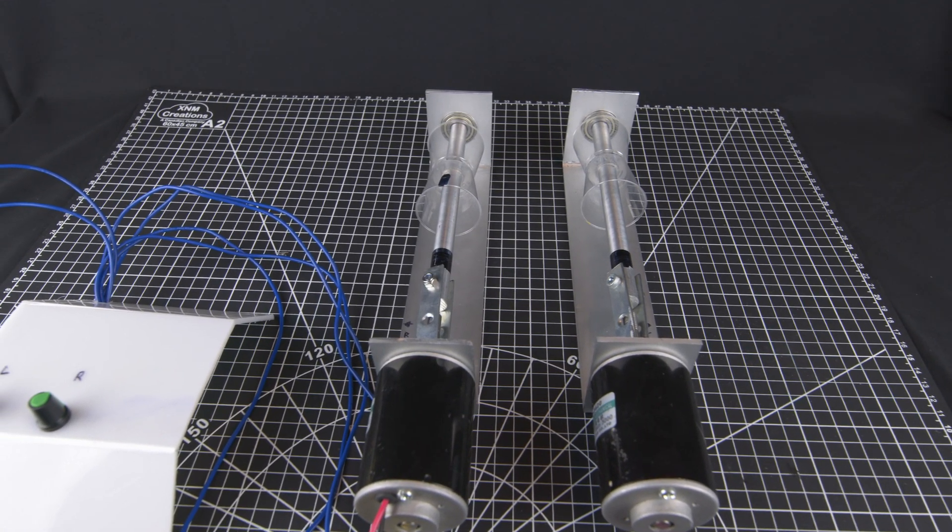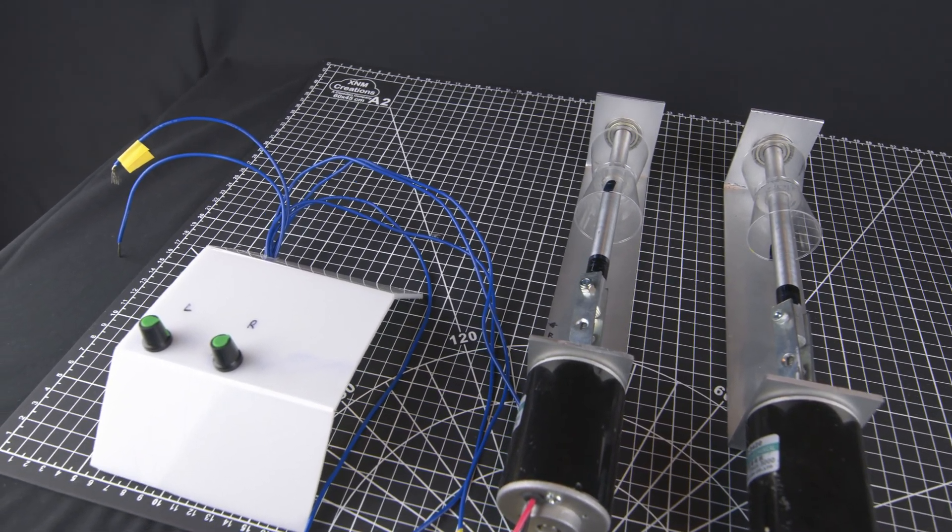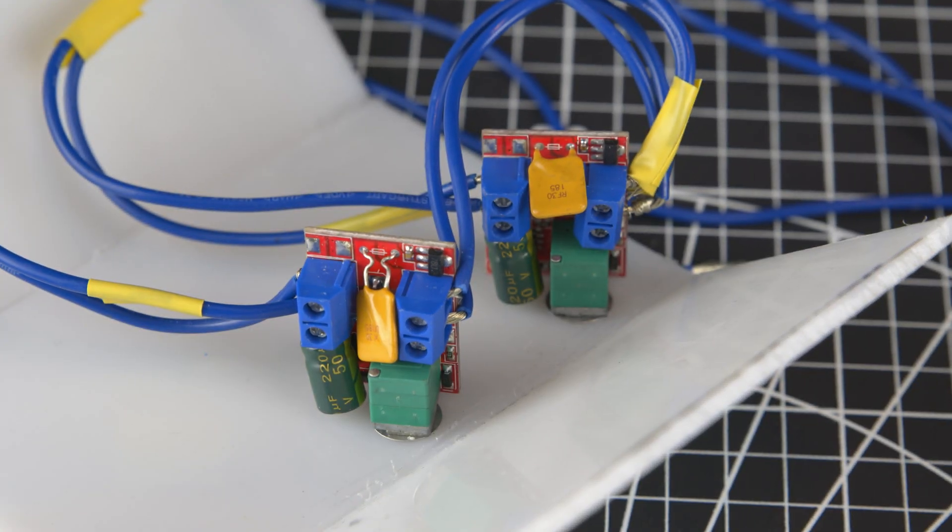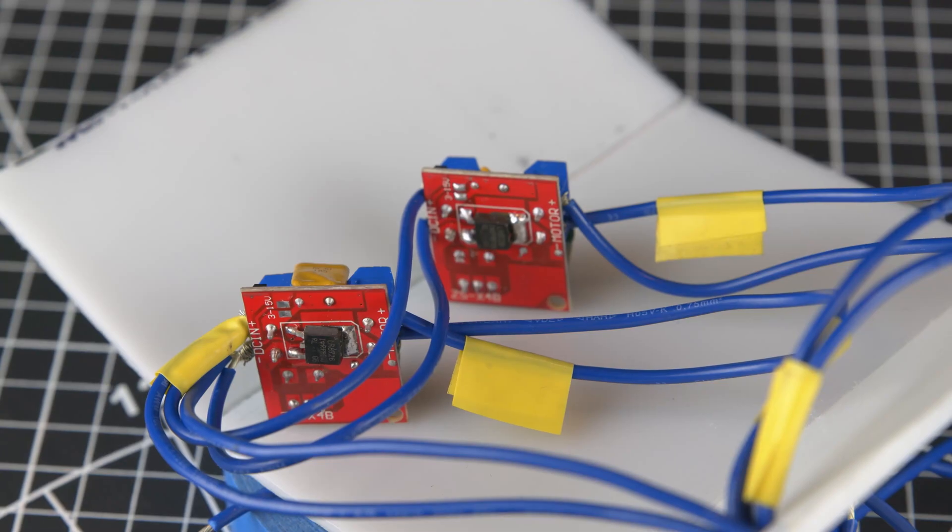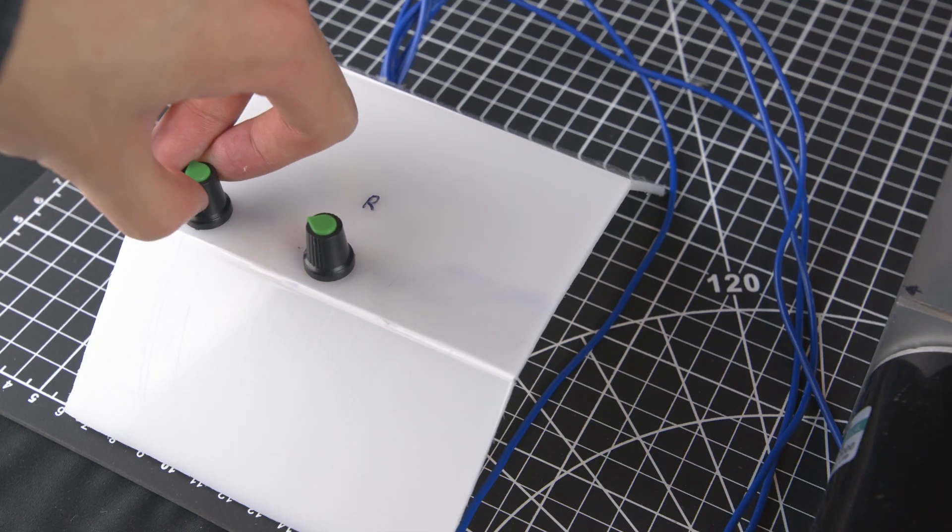I wanted to control the speed of these two rollers independently. To do this, I made a small control console. It has two of these PWM control modules. I can feed in a DC voltage into both modules and get two different PWM signals out.